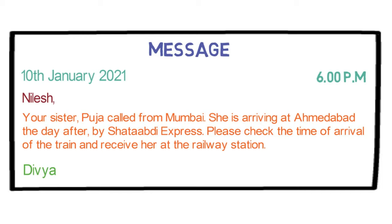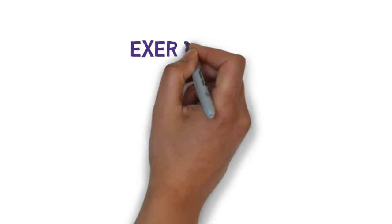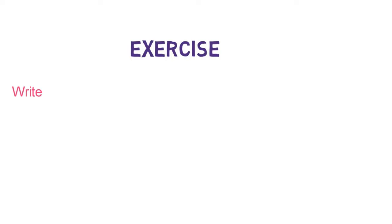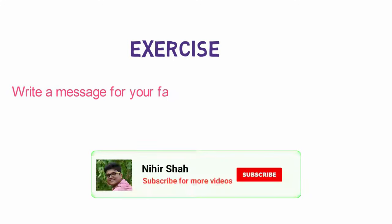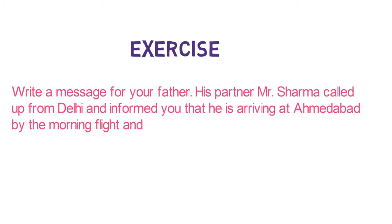So, finally, we have the whole message with us. Pause the video and check the message properly. I hope now you are clear how to write a message. I am now giving you an exercise to practice. The question is: Write a message for your father. His partner Mr. Sharma called from Delhi and informed you that he is arriving at Ahmedabad by the morning flight and needs to be picked up. Please message your message in the comment section.